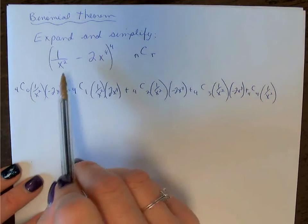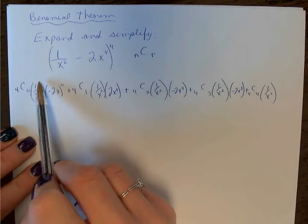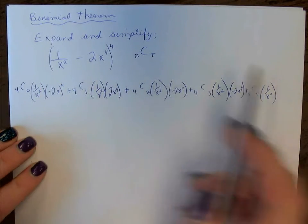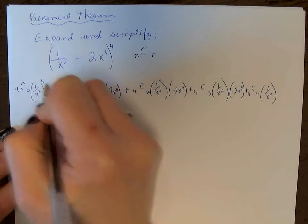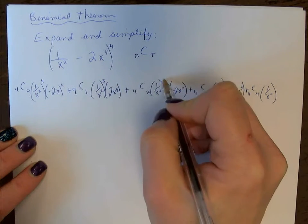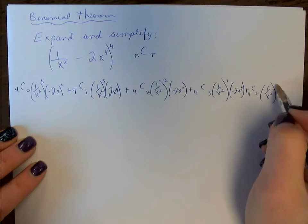Now let's look at the exponents. The very first exponent starts with 4, and we count down to 0. So on the first term, I'm going to just count 4, 3, 2, 1, 0.